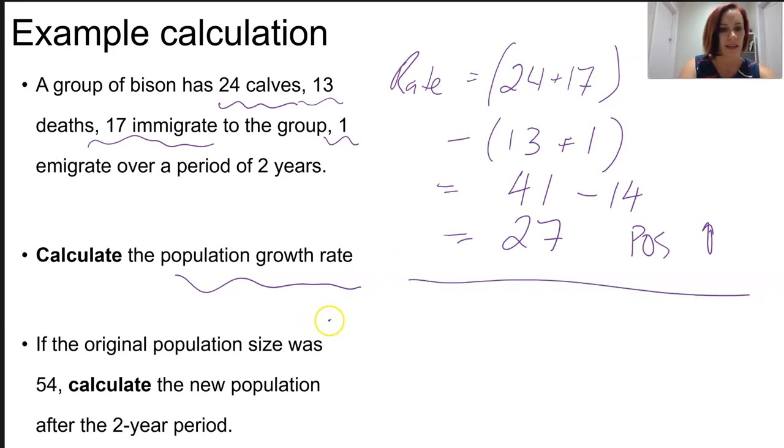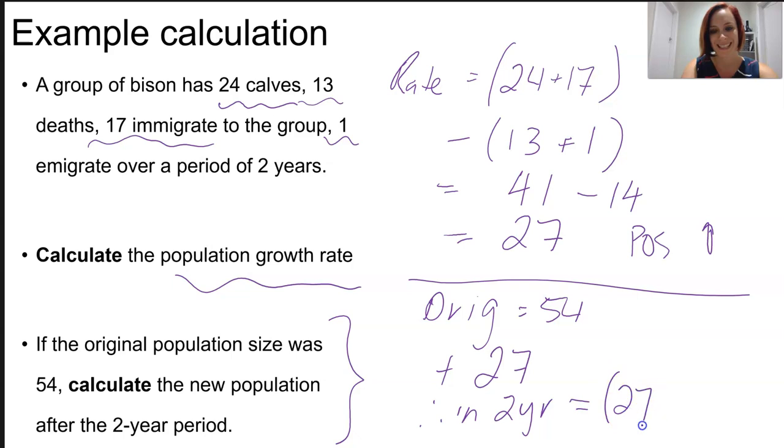If the original population size was 54, we can say, if original was 54, we are adding 27 each year. Therefore, in two years, we are adding 27 new individuals times two, which is going to be another 54, which means our population is doubling in two years. If the original size is 54, then we are adding another 54. Keep in mind, these are really theoretical. There's going to be so many factors that are going to influence the actual population size.